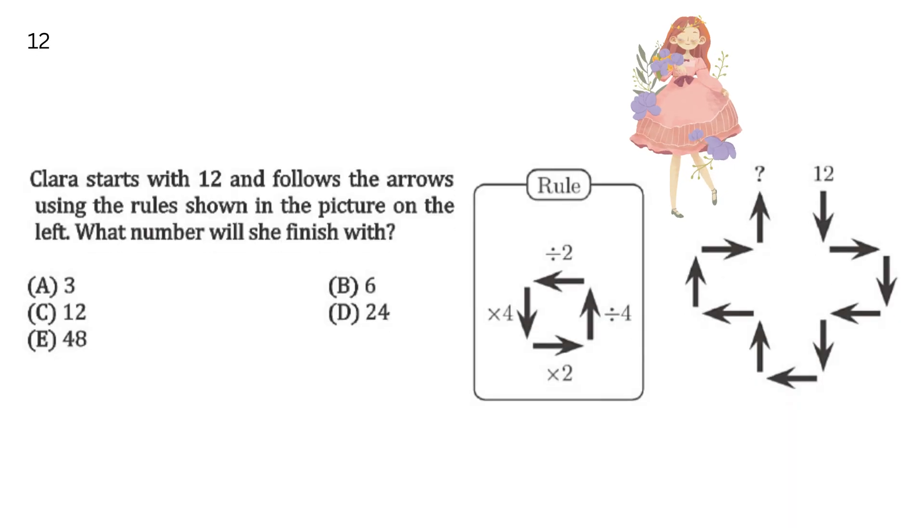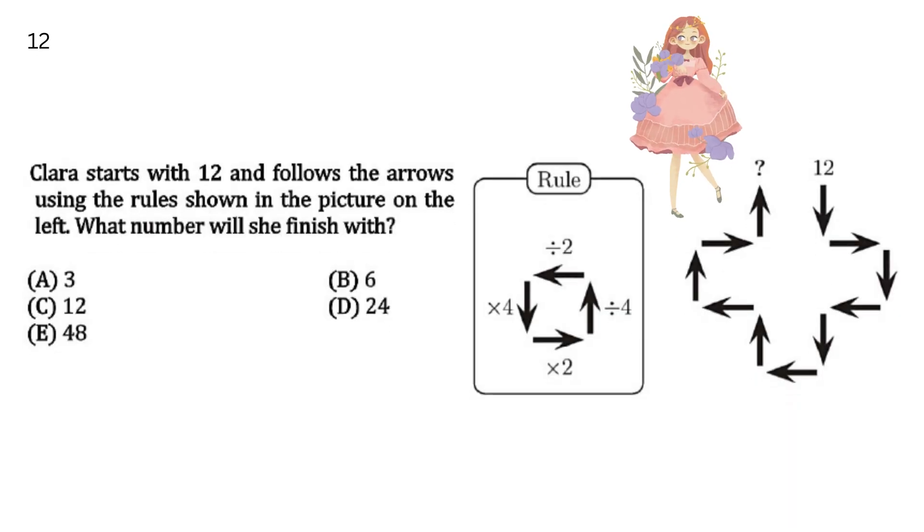Clara starts with 12 and follows the arrows using the rules shown in the picture on the left. What number will she finish with? Clara 12 से शुरू करती है, और arrows को follow करते हुए question mark तक पहुँचती है. कौन सा number होगा?